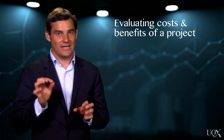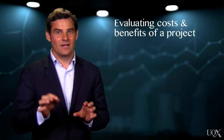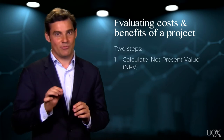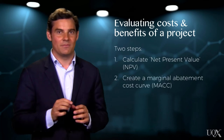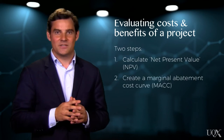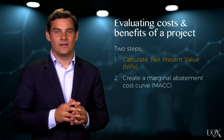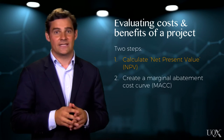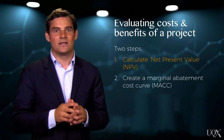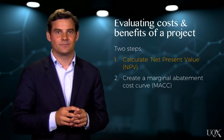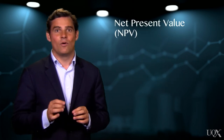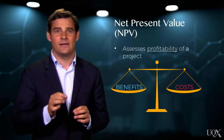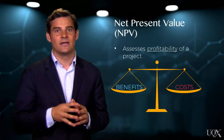This involves two key stages: calculating each project's net present value, and then creating a marginal abatement cost curve. We'll explore net present value in this video and follow up in the next video with marginal abatement cost curves. Net present value, or NPV, is a mathematical formula for assessing the profitability of undertaking a given project.